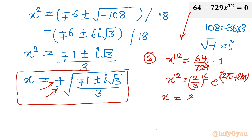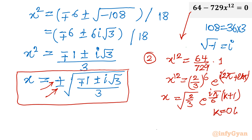So x = √(2/3) · e^(i·π(k+1)/6), where k belongs to integers 0 through 11. Substituting k = 0, 1, 2, … , 11 gives all 12 solutions using the complex number method.